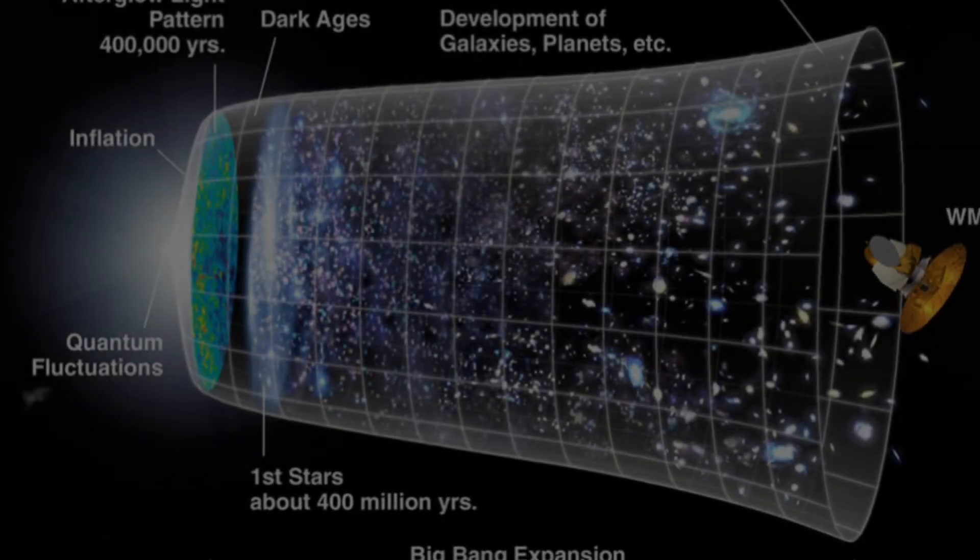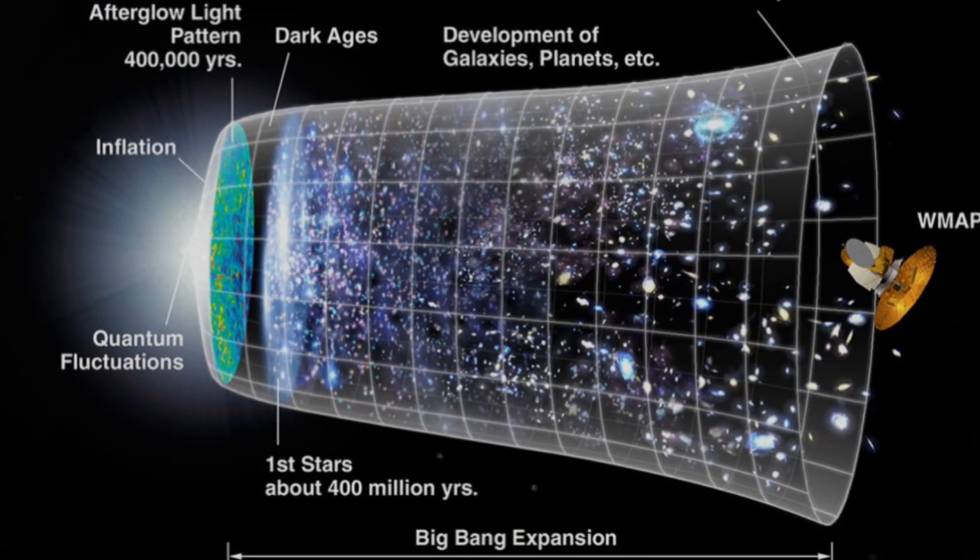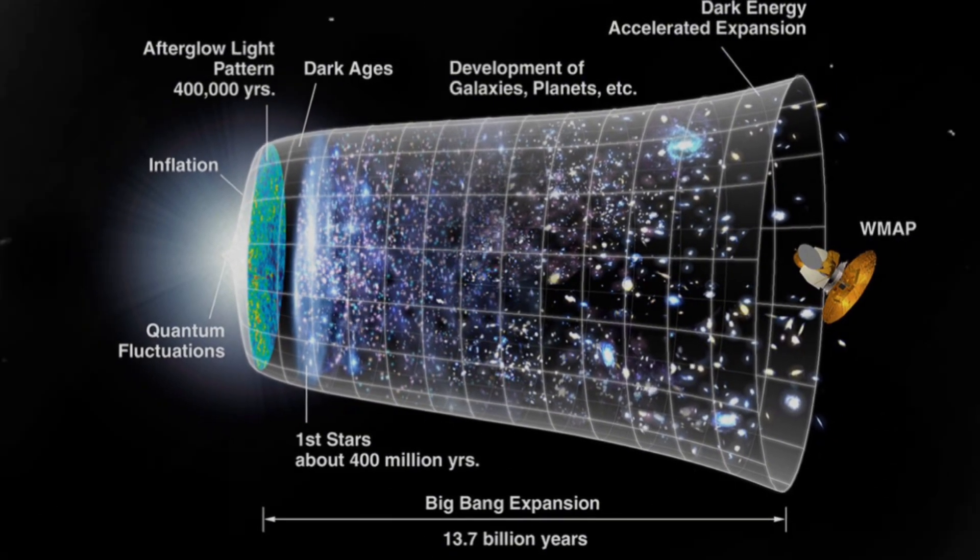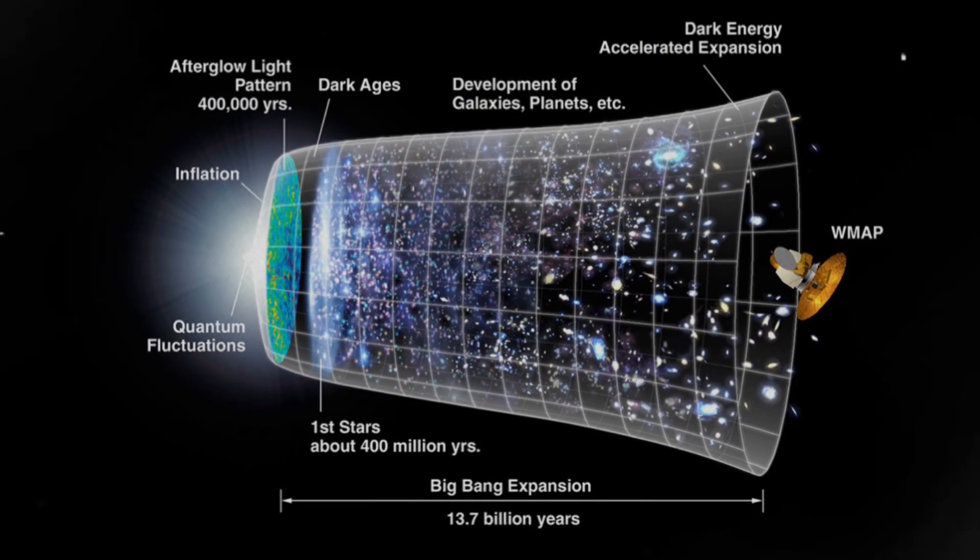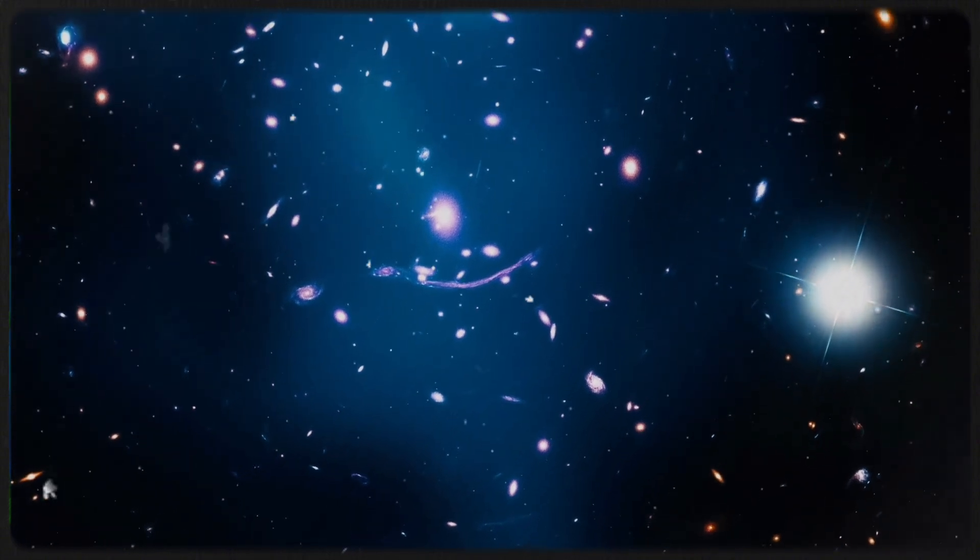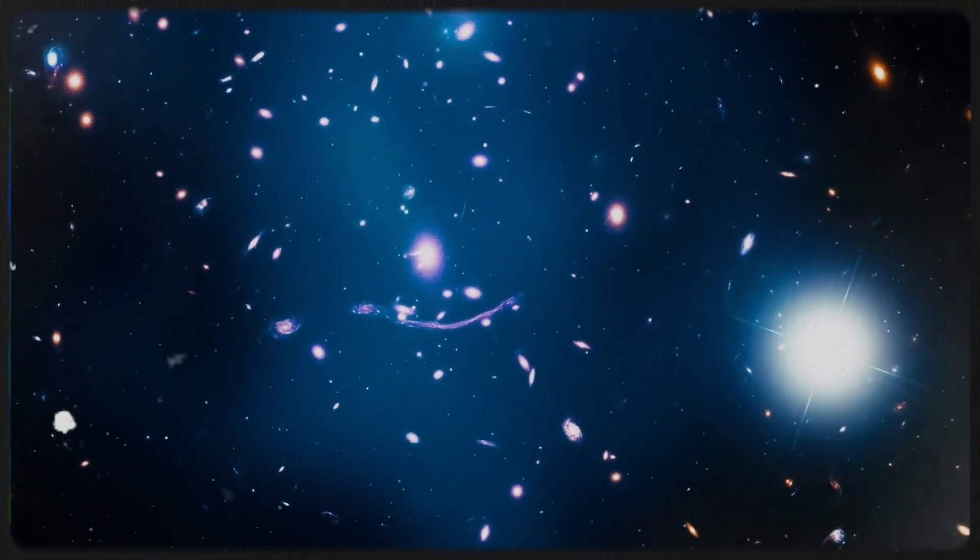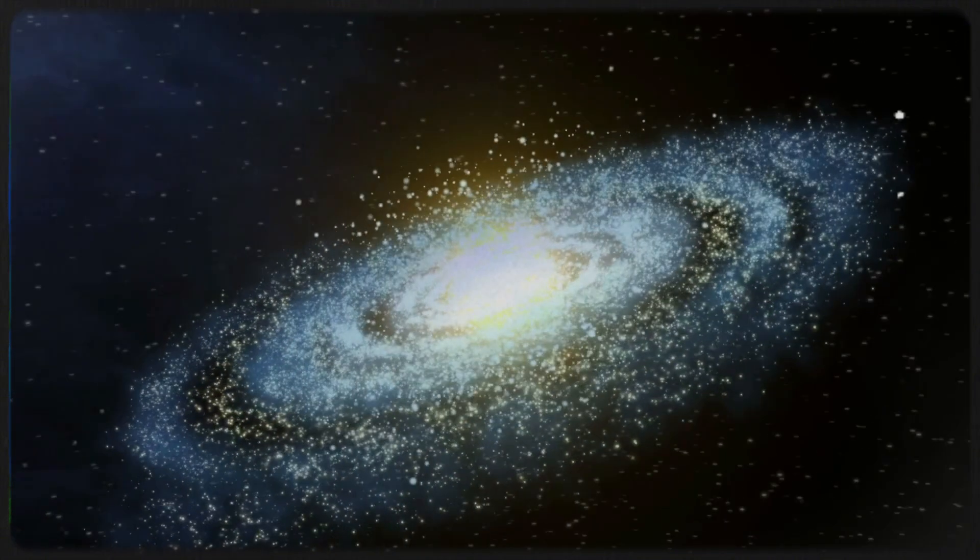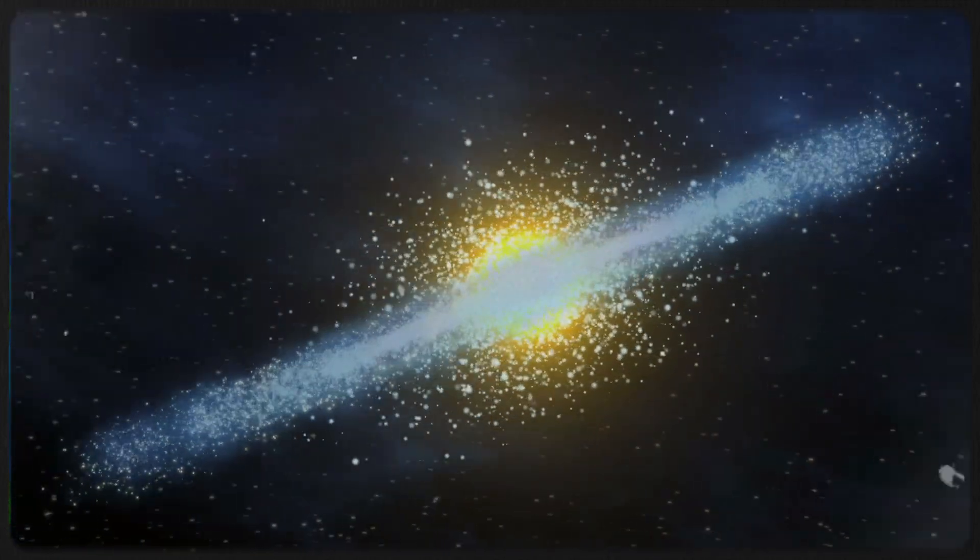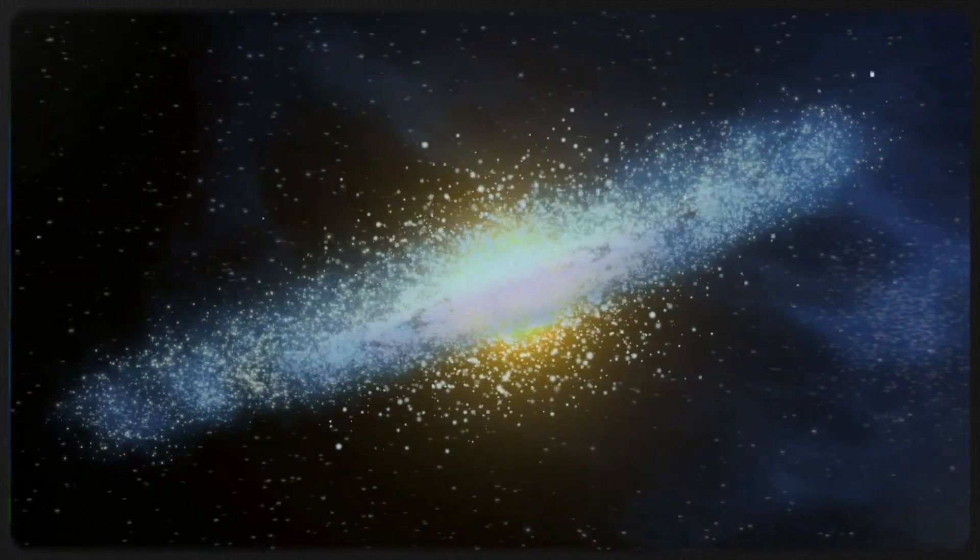To give you an idea, the universe is around 13.8 billion years old, so this little galaxy was already glowing when the cosmos was just a toddler at 2% of its current age. What's wild is that scientists didn't think galaxies this big could form so early. According to current theories, galaxies take time to build up stars, but this one already had hundreds of millions of them lighting up the dark.